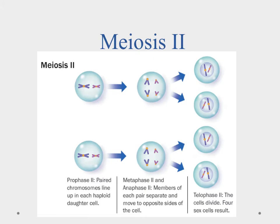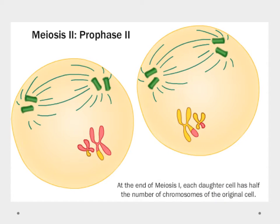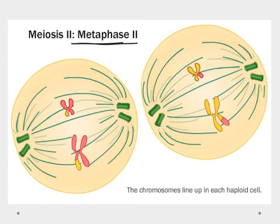Meiosis II is what distinguishes meiosis from mitosis — it's a second division. The two daughter cells from meiosis I now each go through another round of division. In prophase 2, centrioles split, the mitotic spindle forms, and nuclear membranes dissolve again. Crucially, these daughter cells already have half the number of chromosomes of the original cell, so the upcoming division will further reduce their genetic content.